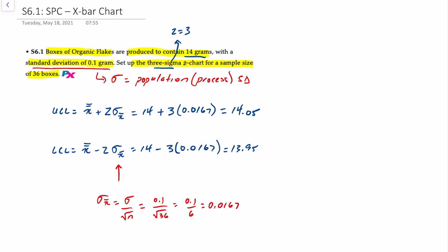Translating this into what a control chart would look like, we would have a dotted line at 14 grams and then an upper control limit at 14.05 and a lower control limit of 13.95. And that's what our X-bar control chart would look like when we're given a population or process standard deviation.